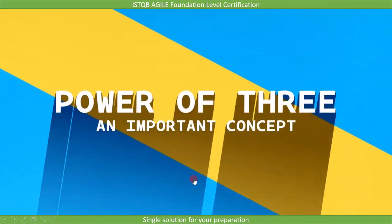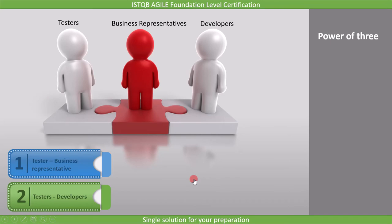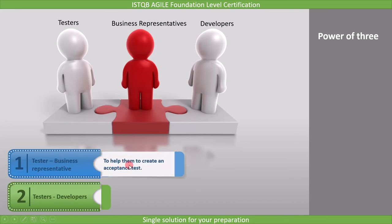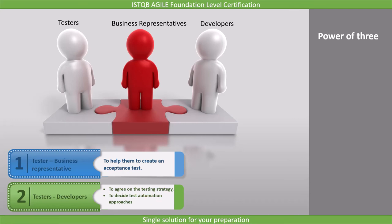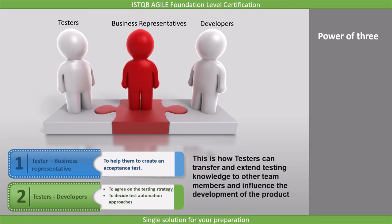Now let's see an important concept: power of three. Power of three represents testers, developers, and business representatives who work together in every step of the development process. Testers work with the business representative to help them create an acceptance test, and testers work with the developer to agree on the testing strategy and to decide test automation approaches.